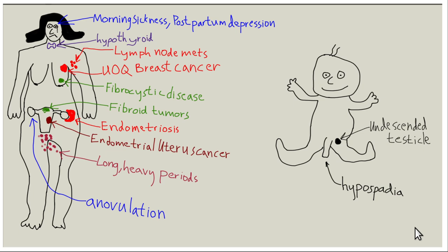Obesogen is a word meaning a chemical that causes obesity, and that term was coined by Bruce Bloomberg, PhD, the scientist who has done a lot of research on obesogens. He started out doing his work on tributyl tin, which is a type of paint painted on the undersurface of boats to prevent barnacles from growing on them, and they found out it was having estrogenic effects on the local marine life.